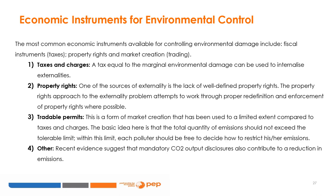4. Open access resources, where no group or individual has ownership rights of the property, implying that none has legal power to restrict access. Each user has the incentive to look at total costs and benefits rather than marginal costs and benefits. Consequently, the resource will be utilized until total cost equals total benefits. In a cost-benefit framework, the objective is to maximize the net gain, which occurs when marginal cost equals marginal benefit. Over-exploitation of the resource results in inefficient allocation.